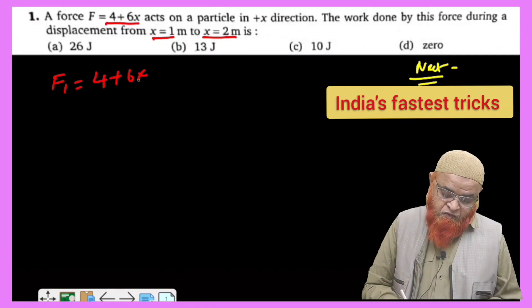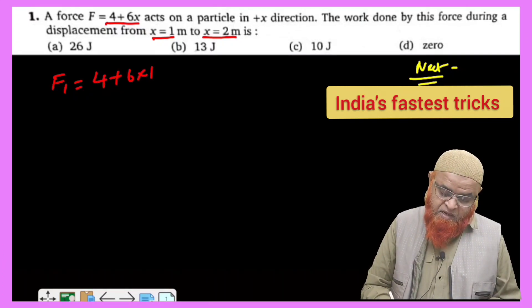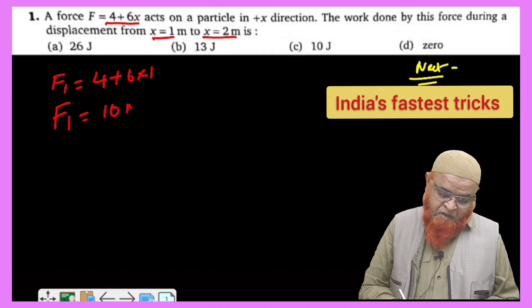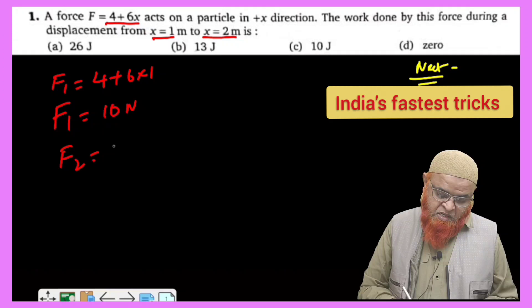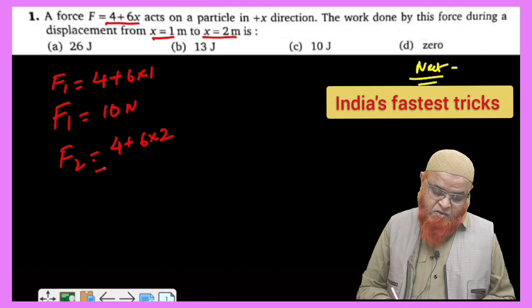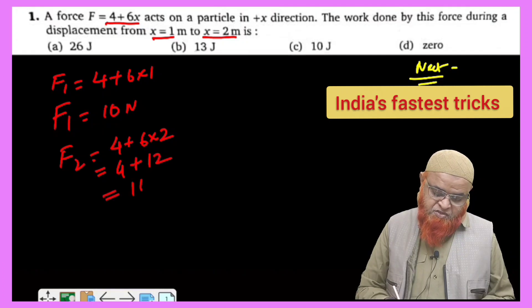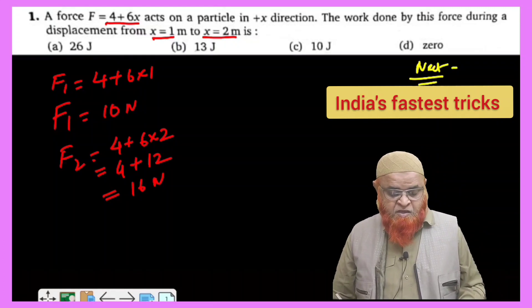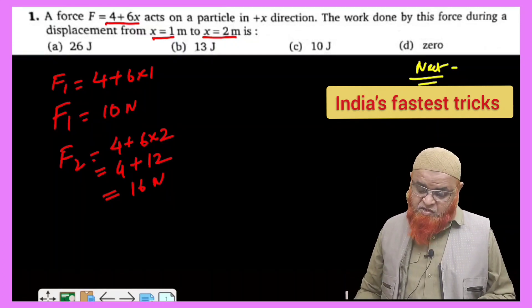F1 is equal to 4 plus 6 into 1, because x equal to 1. So therefore F1 is equal to 10 newtons. Then what is F2? F2 is equal to 4 plus 6 into 2, so therefore 4 plus 12, which is going to be 16 newtons.